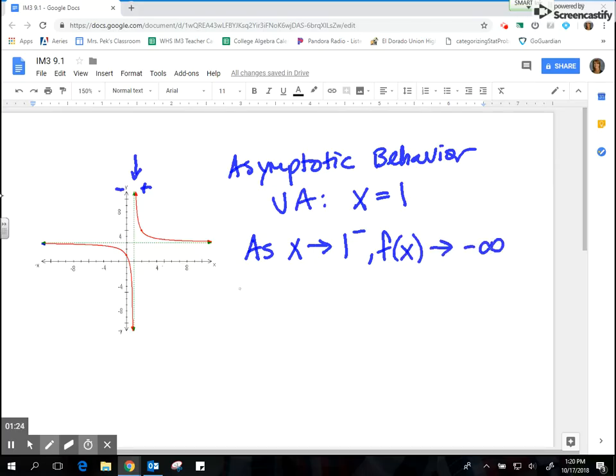Then we look at the other side. As x approaches 1 from the right, or with a little plus sign there on the right side, as we get closer to 1 with our x values, the y values go up to positive infinity. And there you have it, your asymptotic behavior of a rational function.